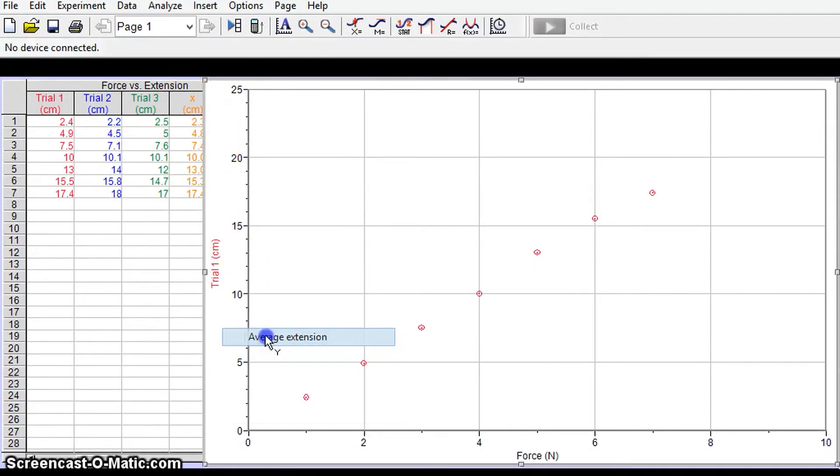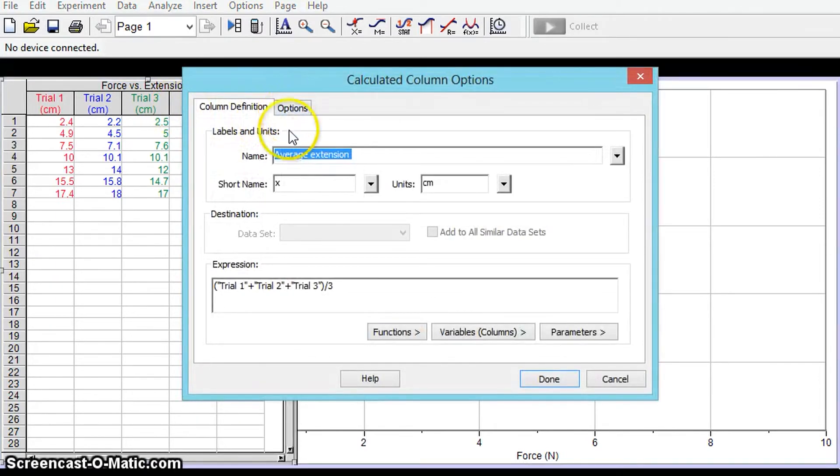Average extension, select that so that's my average values there. Now I need to assign an uncertainty to these average values so I'm going to double click at the top of the column for the average extension and I get this window here.